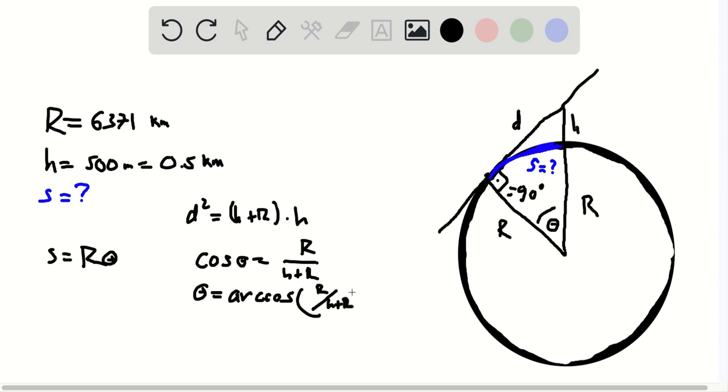So this is the value for the angle theta. And now just putting this into this formula over here for the arc length, we find that s is equal to r times, let me just abbreviate arccos to acos. And so this is just going to be r times acos of r over r plus h.